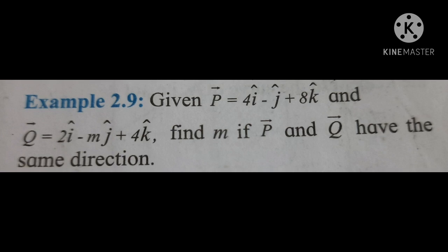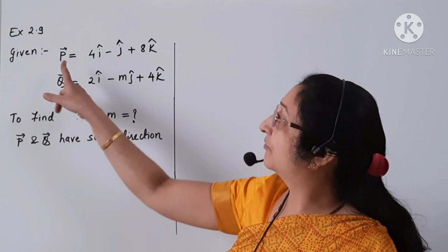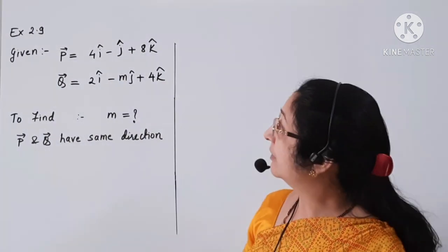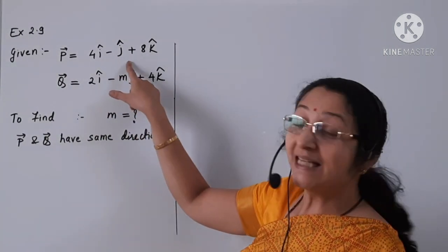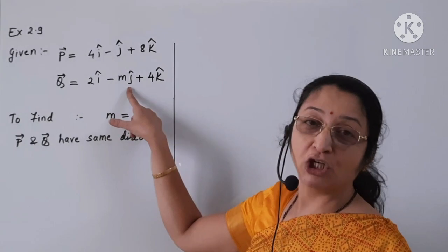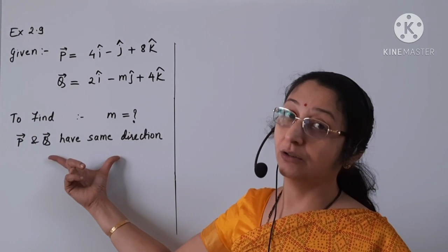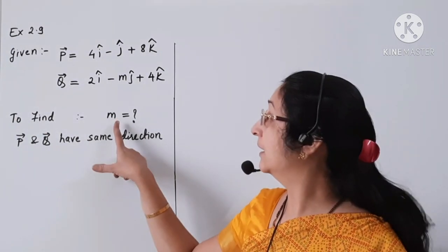Given p equal to 4i minus j plus 8k and q equal to 2i minus mj plus 4k, find m if p and q have the same direction. It is given that there is a vector p which is 4i minus j plus 8k, and there is another vector q that is 2i minus mj plus 4k. Since p and q are in the same direction, we are asked to find the value of m.